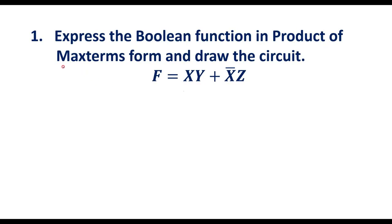Maxterm is nothing but the product of sum terms, where each sum term consists of all the variables. The given function is in sum of product form — we can see product terms combined with a sum, making it an SOP. First, we'll try to represent this function in product of sum form.